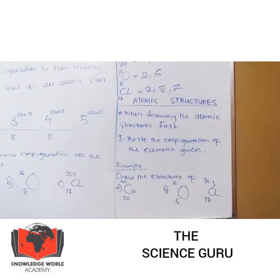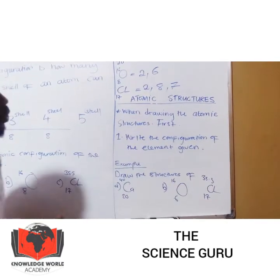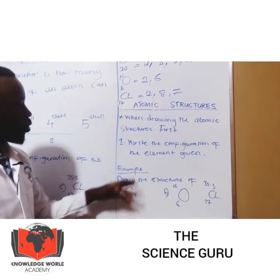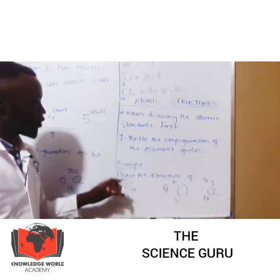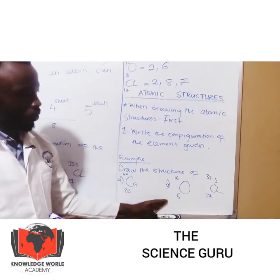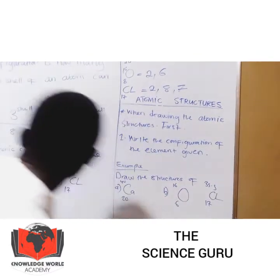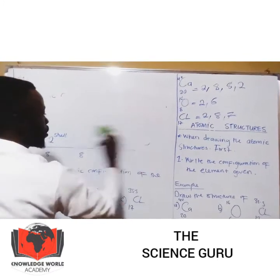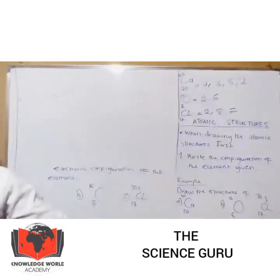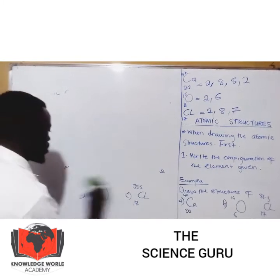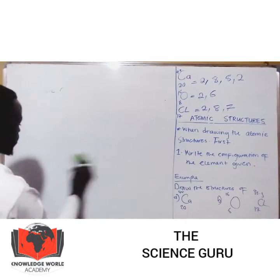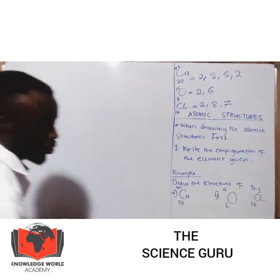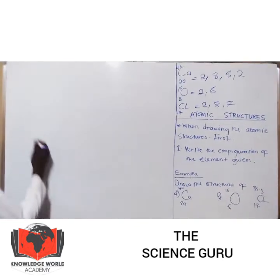Then, the atomic structures. When drawing the atomic structures, first write the configuration of the element. Example: draw the structures of calcium, oxygen, and chlorine. So we are going to draw the structures. The structure of calcium — remember, this is 20.